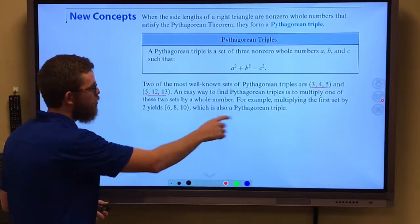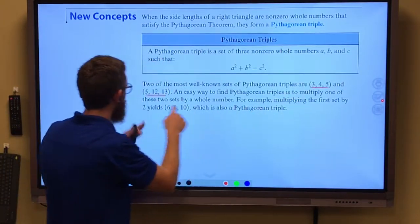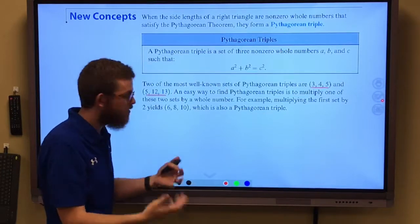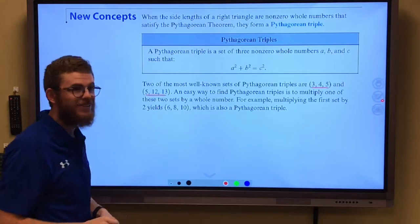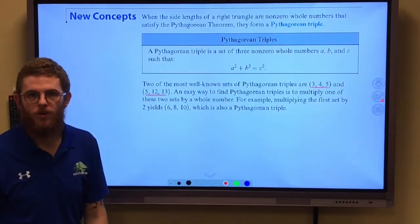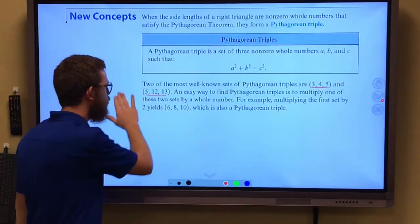If we multiply 3, 4, and 5 by 2, we multiply them all by the same number there, we get 6, 8, and 10, which is also going to work to form a right triangle. Pretty helpful stuff.